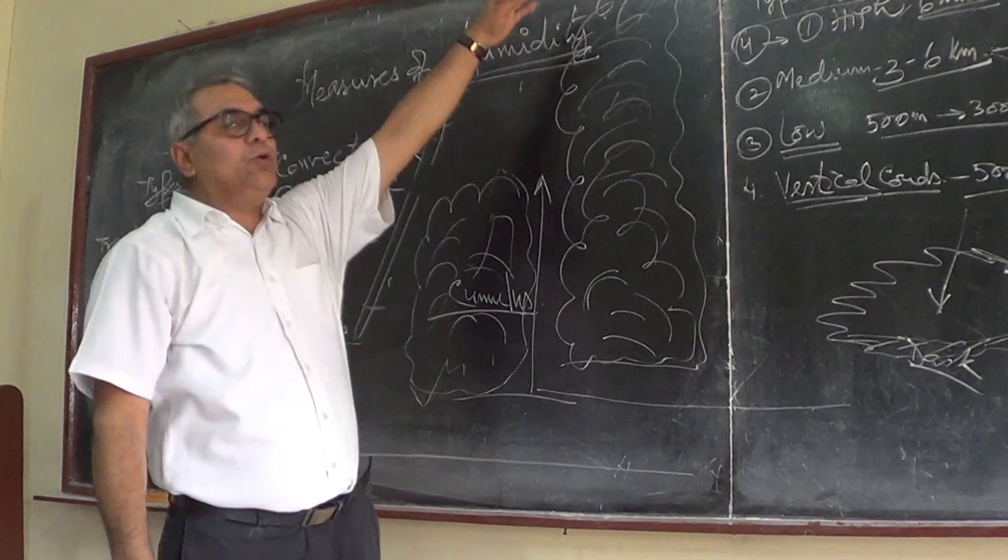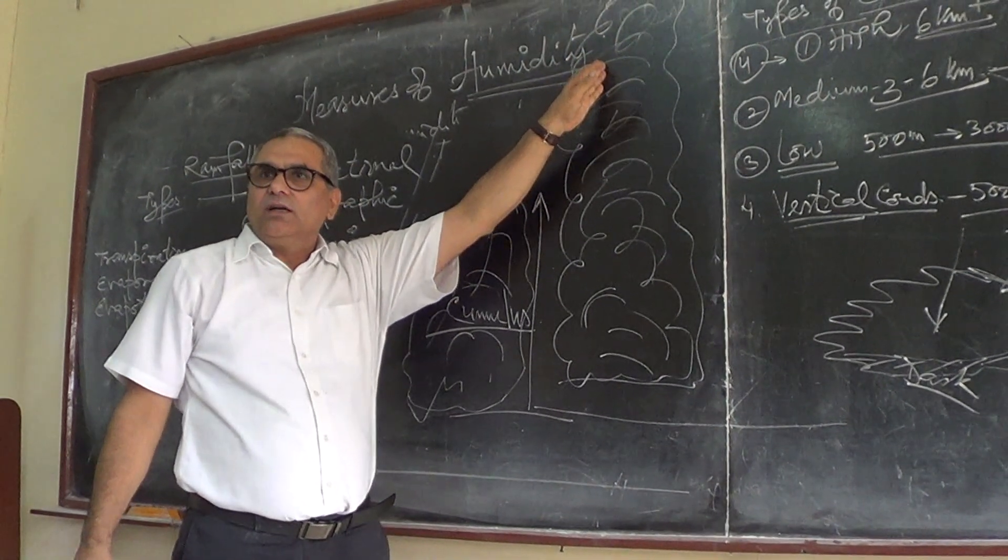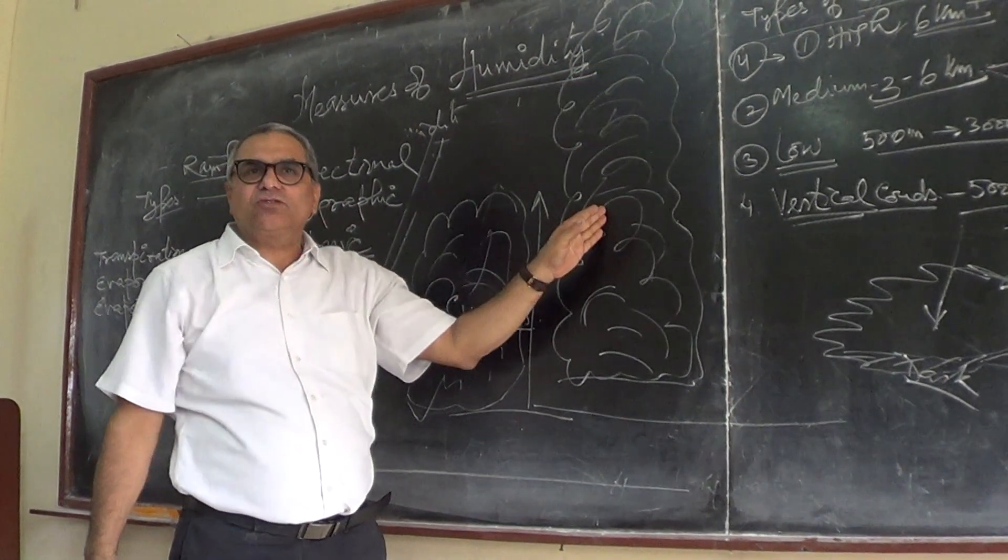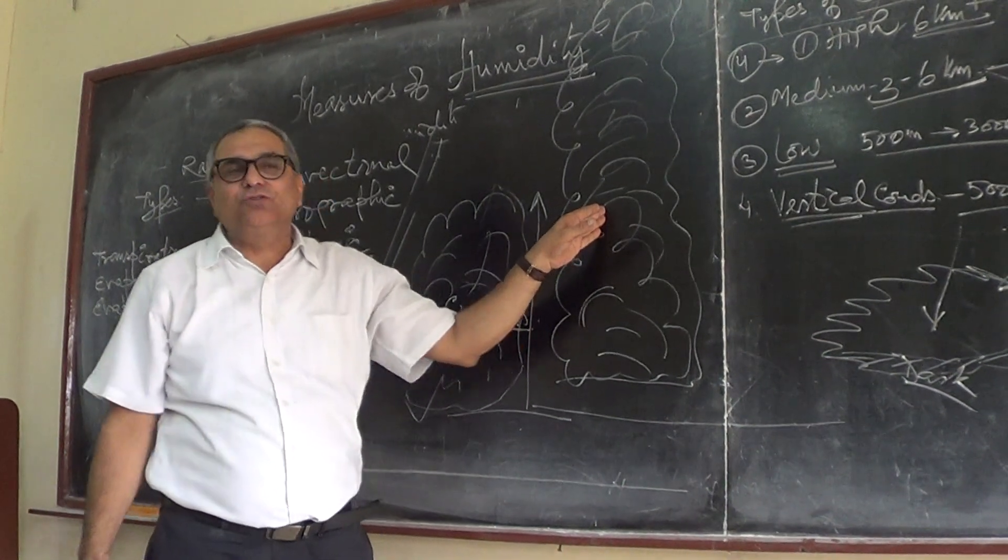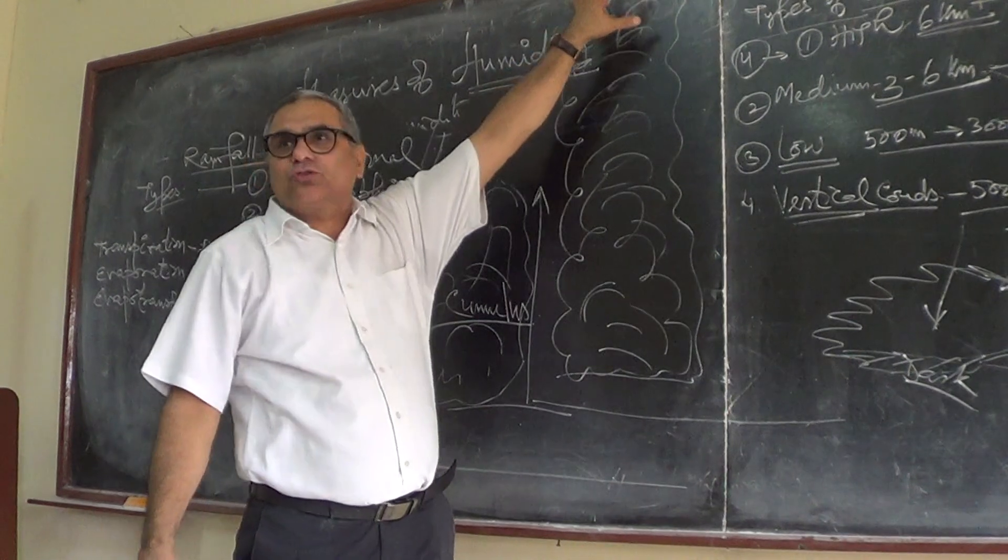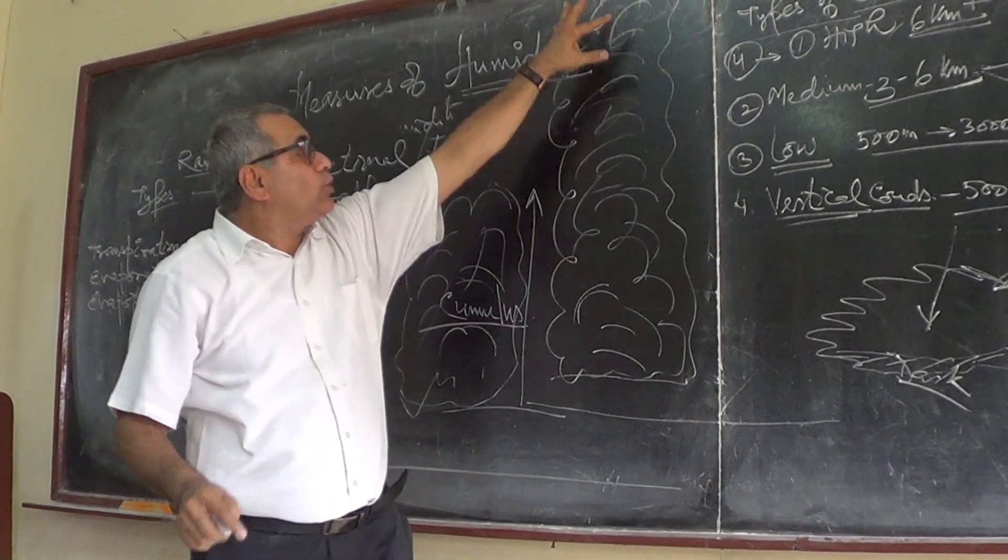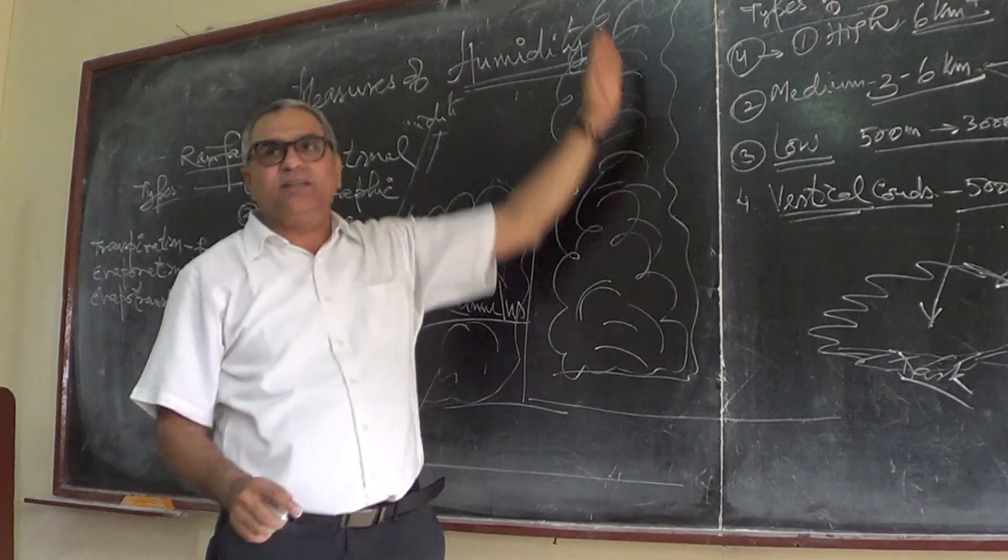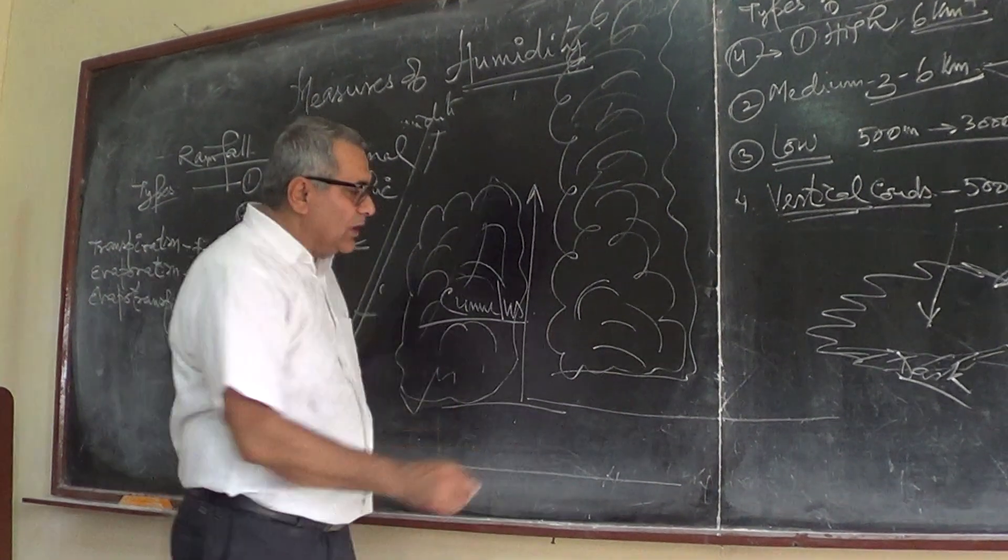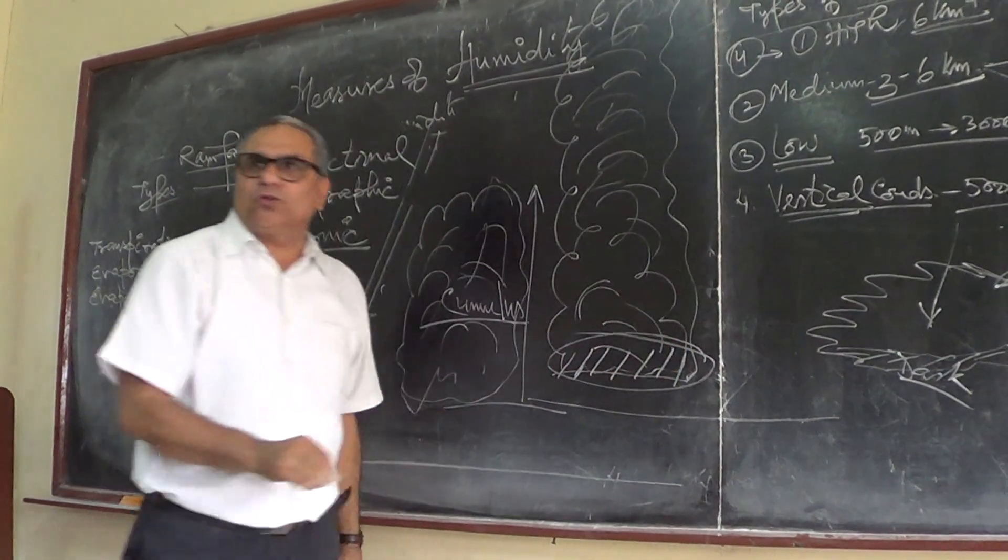See vertical clouds, they are up to 10 km, 5 km, they are sometimes 4 km also, it depends on the intensity of clouds. The lower portion is in the rain.